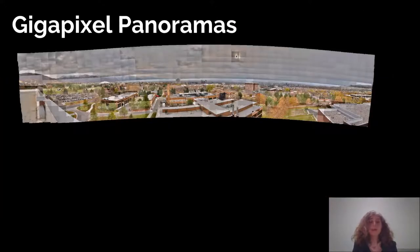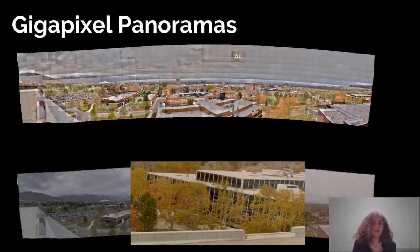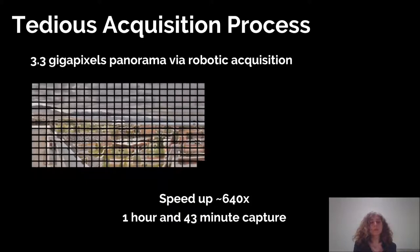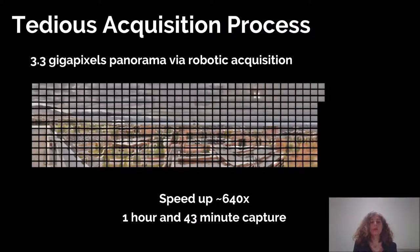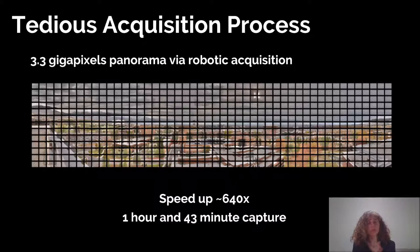Gigapixel panoramas allow giving a context of a landscape while letting the user zoom to see detailed captures with billions of pixels contained in each image. This process is really tedious to acquire because you need to acquire a lot of images of the whole landscape, and you often need a robot to help you do the acquisition precisely. It can take up to one hour and 40 minutes even with this assistance to get a 3.3 gigapixel panorama.